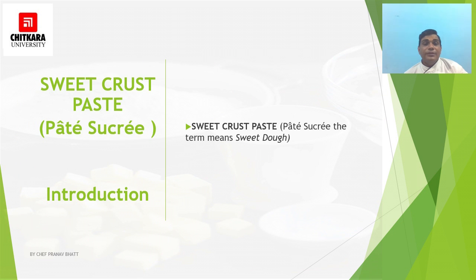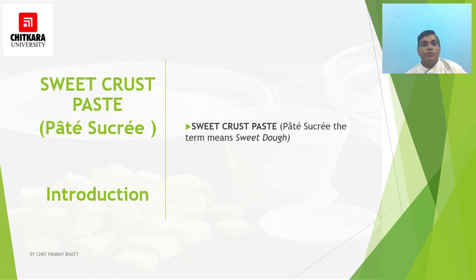The next type of pie and tart dough is sweet crust paste, also known as pâte sucrée, which means 'sweet dough.' It is also known as one-two-three dough, or three-to-two-to-one dough. This paste is basically used for sweet pies, flans, tarts, and tartlets. It is high in sugar content and the finished texture is short and sweet in taste, unlike short crust paste.